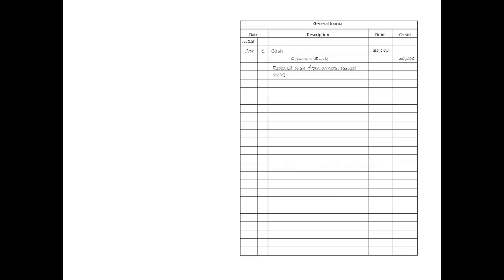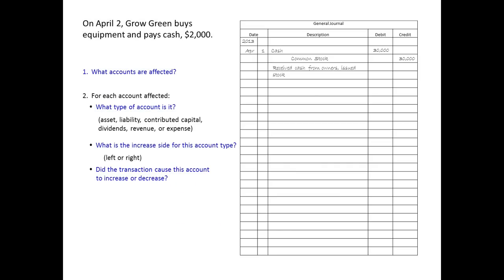Let's journalize another transaction. On April 2nd, Grow Green bought equipment and paid cash. What accounts are affected? Cash and equipment. For cash, what type of account is it? Asset. What's the increased side for an asset? Left. Did cash increase or decrease? It decreased, so we'll use the right side. For equipment, what type of account is it? Asset. What's the increased side for an asset? Left. Did equipment increase or decrease? It increased, so we'll use the increase or normal side — the left.